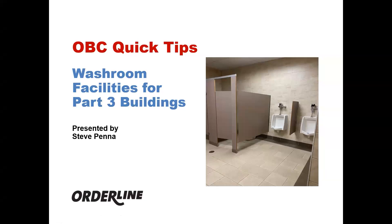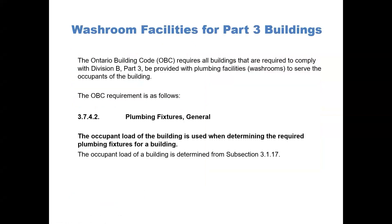Welcome to OrderLine's OBC Quick Tips. This topic is regarding washing facilities for Part 3 buildings. The Building Code requires all buildings that are required to comply with Division B Part 3 be provided with plumbing facilities, washrooms, to serve the occupants of the building.